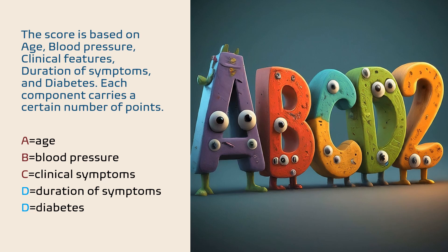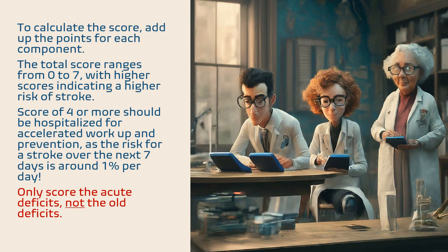The score is based on age, blood pressure, clinical features, duration of symptoms, and diabetes. Each component carries a certain number of points. To calculate the score, add up the points for each component. The total score ranges from 0 to 7, with higher scores indicating a higher risk of stroke.